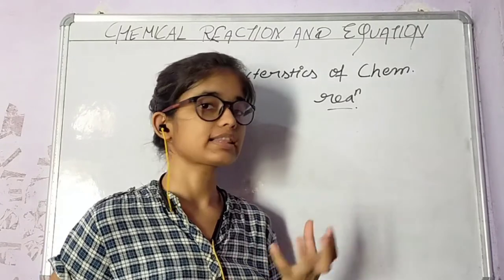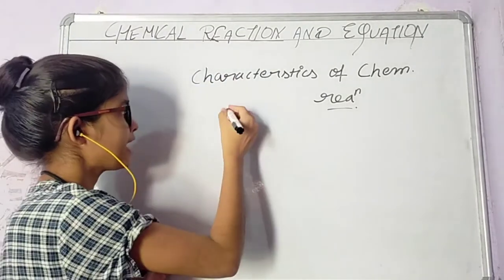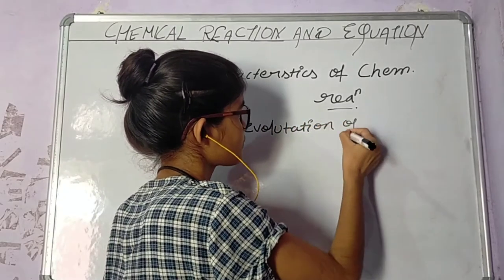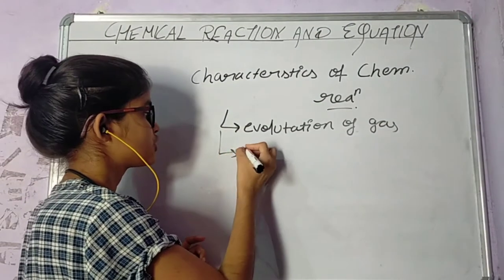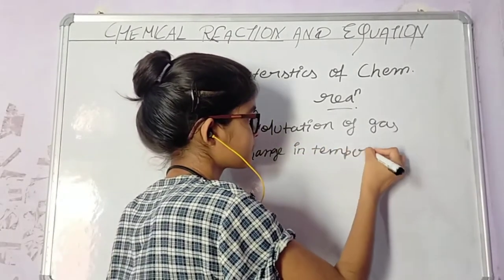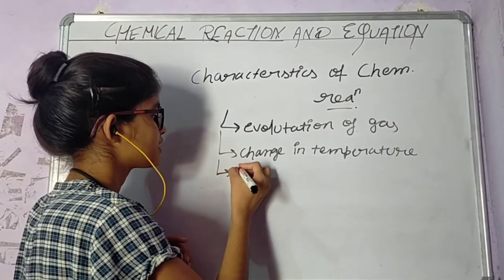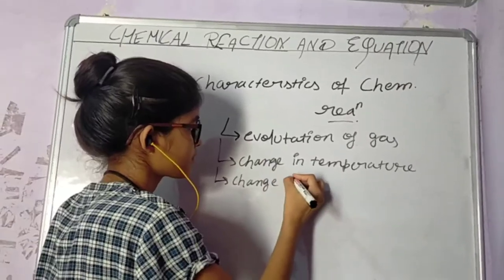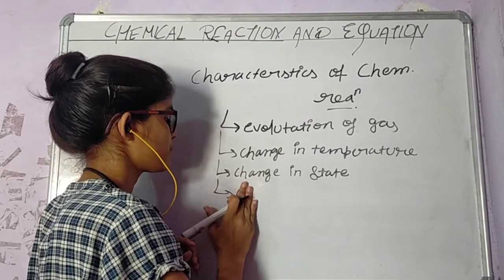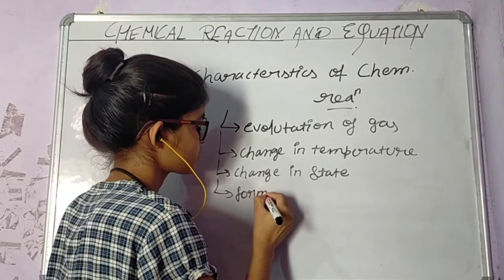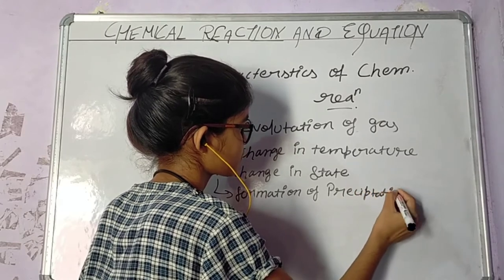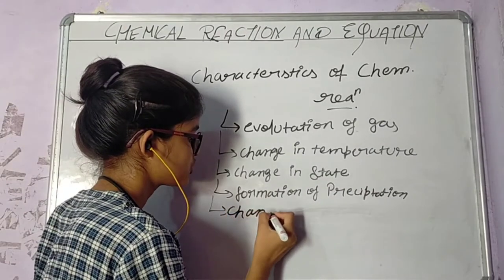When a chemical reaction occurs, there are observable changes. The first is evolution of gas. The second is change in temperature. The third is change in state. The fourth is formation of precipitation. And the fifth is change in color.